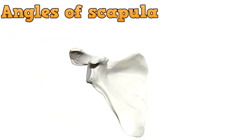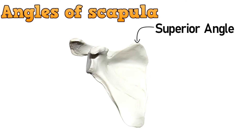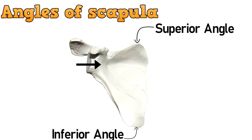The third part of scapula are the angles. This is the superior angle, this is the inferior angle, and this broad angle is the lateral angle.